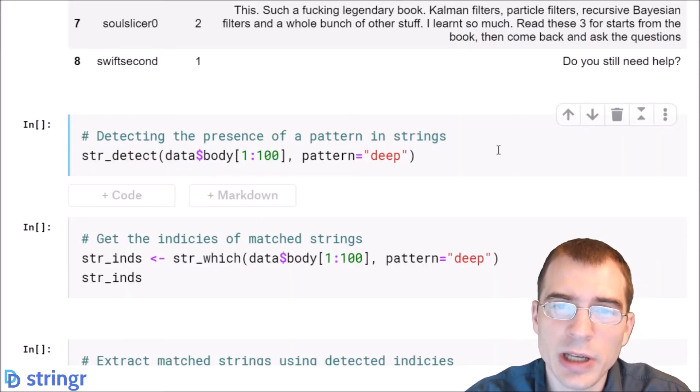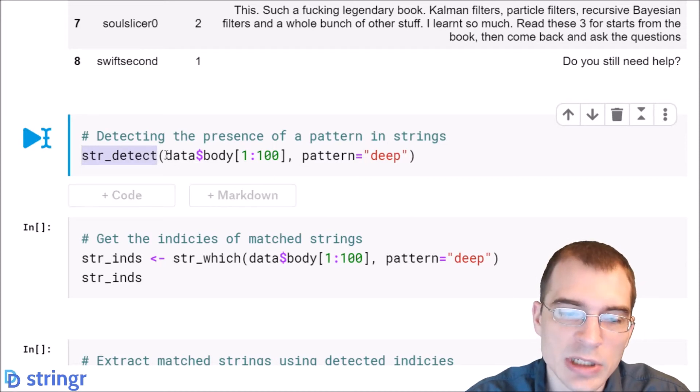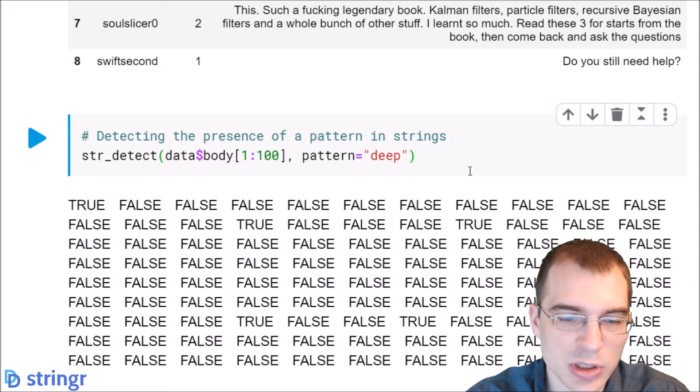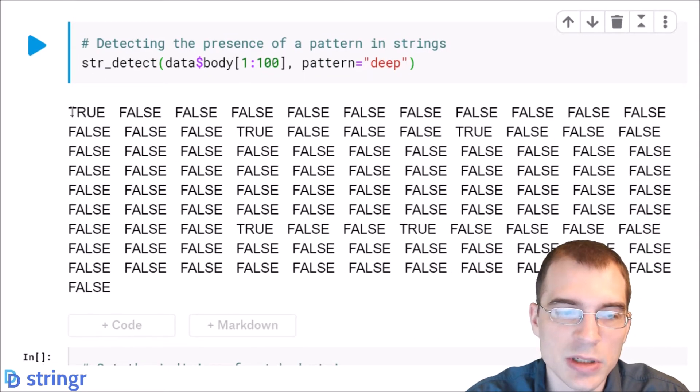I'll start by showing how to do string pattern detection. So what we're basically doing here is seeing whether a certain string or string pattern exists within other strings. And to do that we can use the str_detect function. So we're going to take the first 100 records in this data set, the first 100 posts. We're going to see if they contain the value deep. So essentially we're looking for posts that might be about deep learning. And we're going to see what the result of this function is. You can see each one where that is true is labeled as true and every one that wasn't is false.